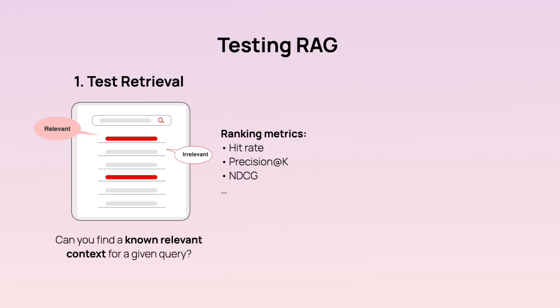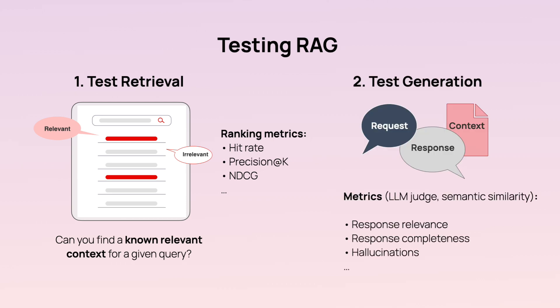So how can you evaluate complex systems like this? The first idea is to break it down into smaller testable components — just as before, you build evaluators and test cases, but you evaluate only part of the system at a time. For a RAG system there are two main components. The first is retrieval: you check that it can find the relevant documents that answer the question, treating this as a ranking problem. The second is generation: you check answer correctness, relevance, and hallucinations.